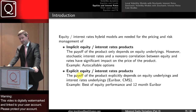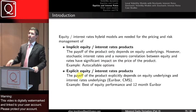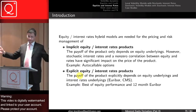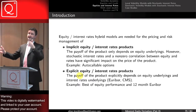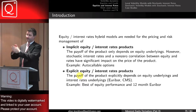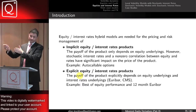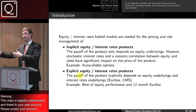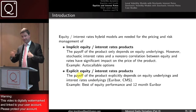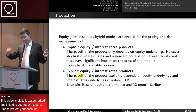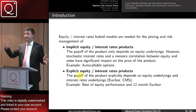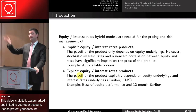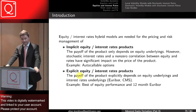Another example is the autocallable option. It's basically a five-year product and every year or every half year you're looking at the spot level. If the spot level is higher than the current spot, you get a coupon. If not, you carry on for the next year. The first time you're above the watermark, you get your coupon. And if it never happens, at the end you get maybe spot back or some other positive curved function of the spot.